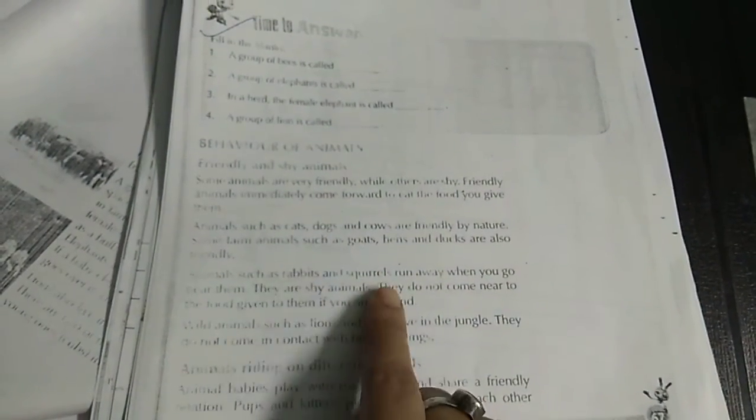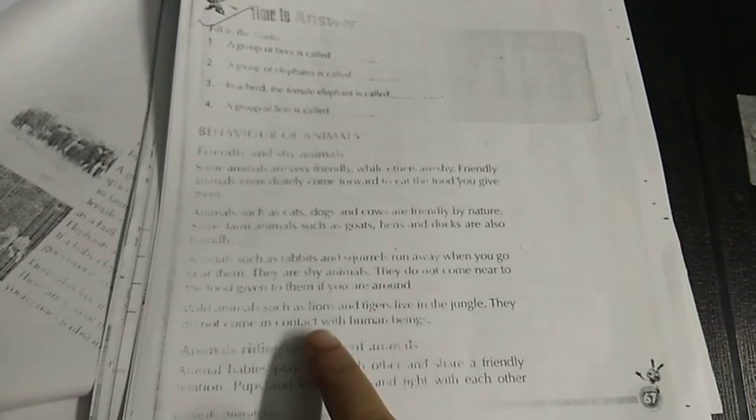These are friendly animals: cat, dog, cow. And shy animals: rabbit and squirrel. They are shy animals. And wild animals: lion, tiger. They do not come in contact with human beings.